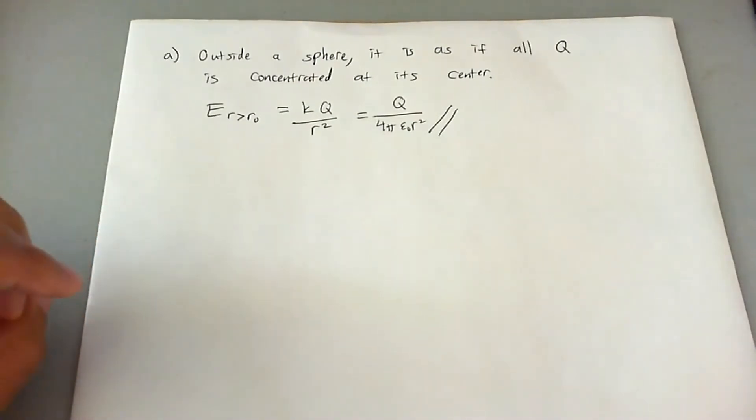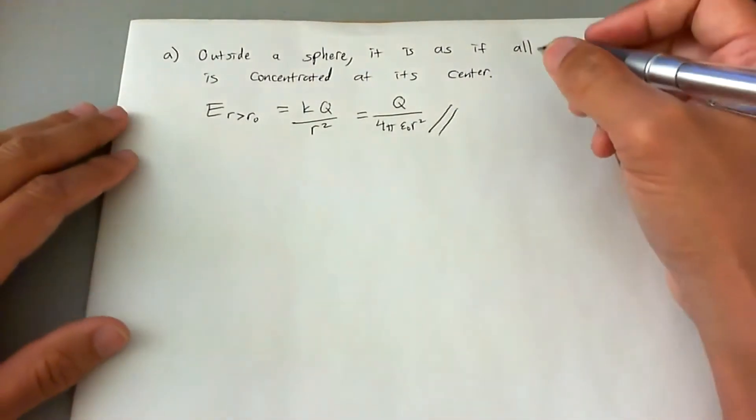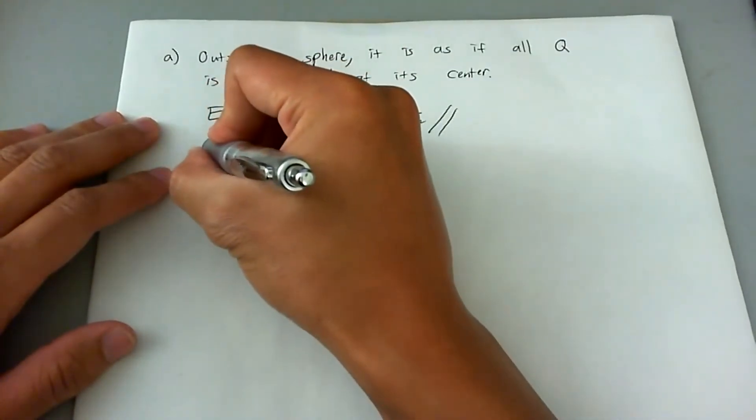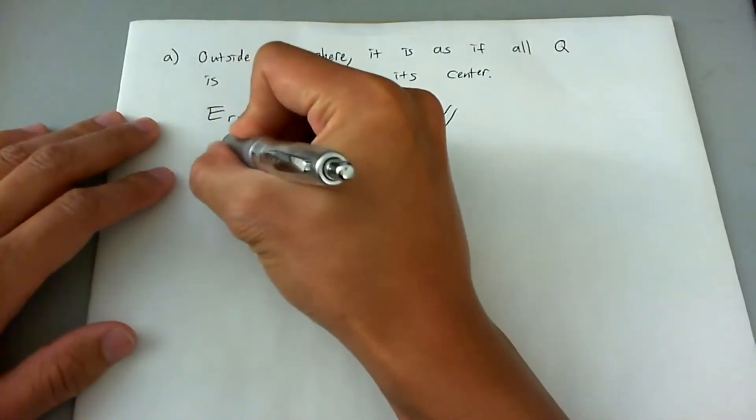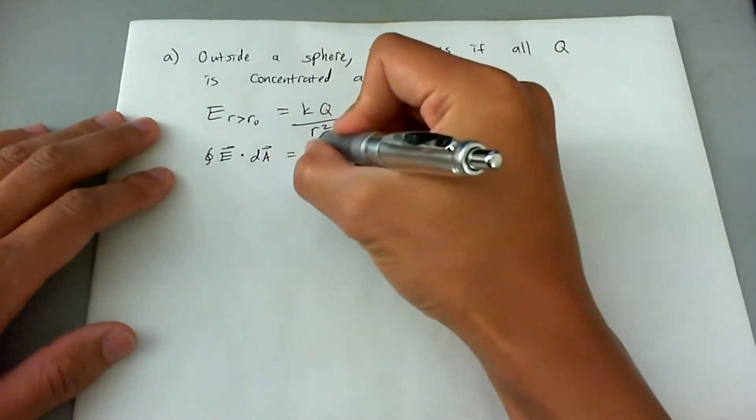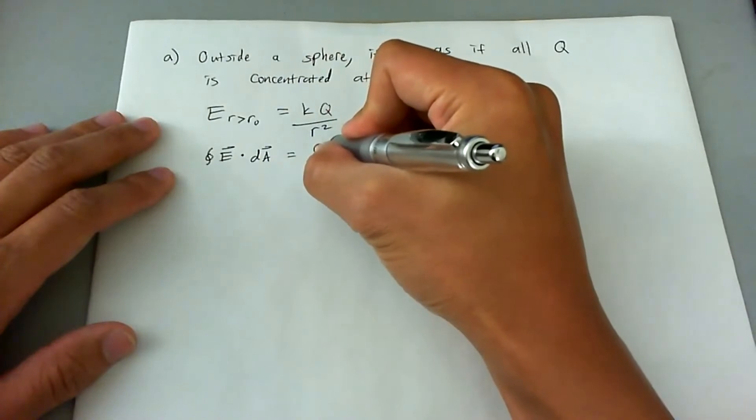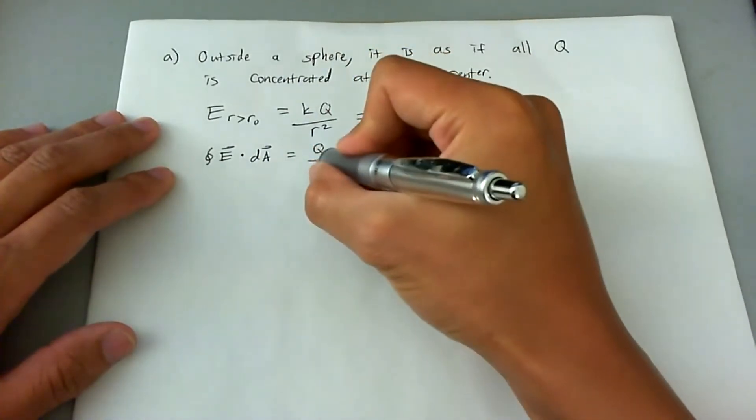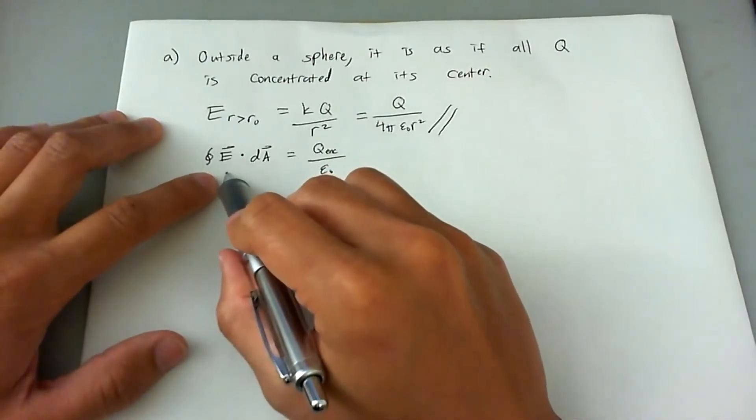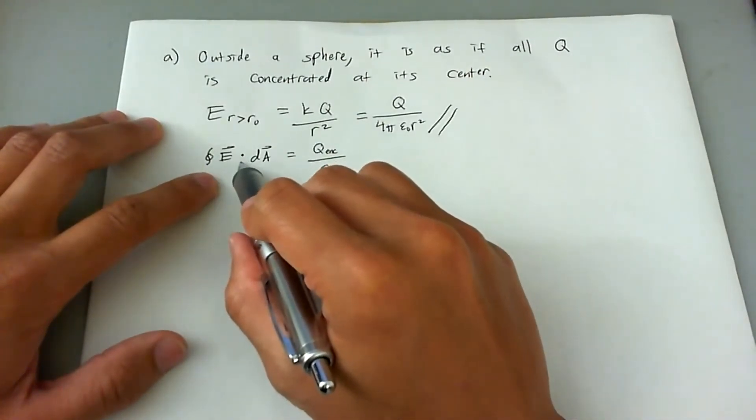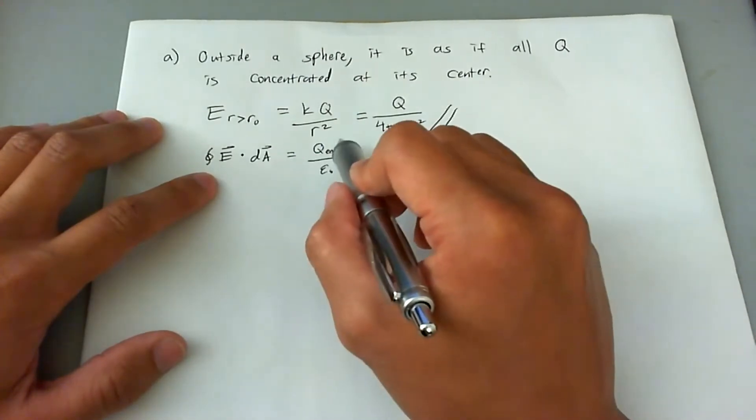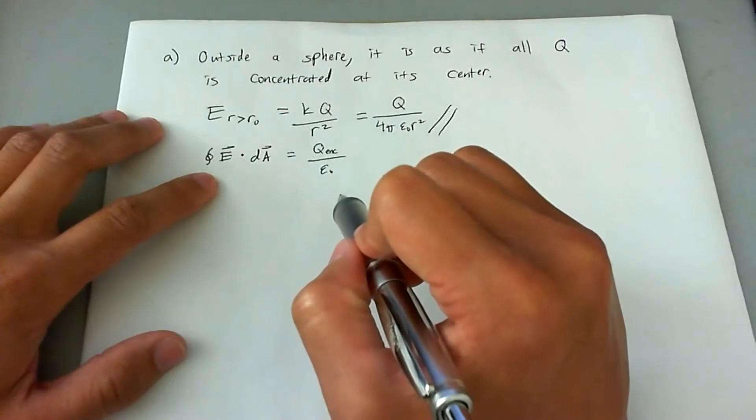Let's go ahead and prove it though, just to put our minds at ease. We could basically say that Gauss's law is given as the closed integral of the E field parallel with an infinitesimal area is equal to the charge enclosed divided by epsilon naught.